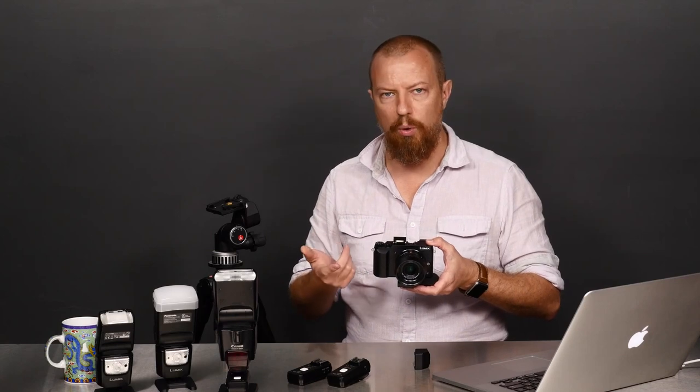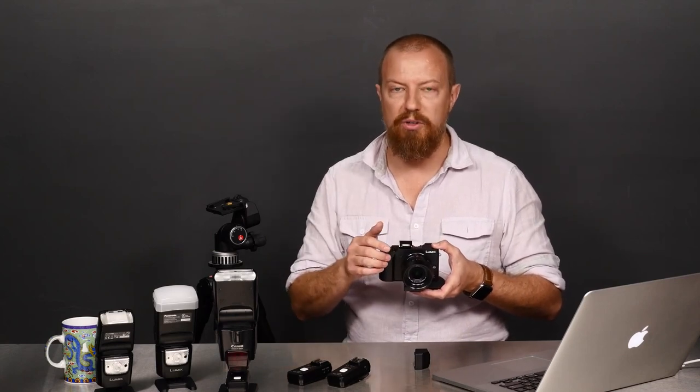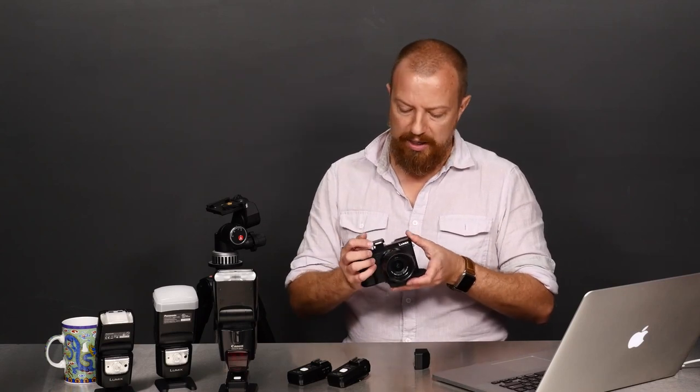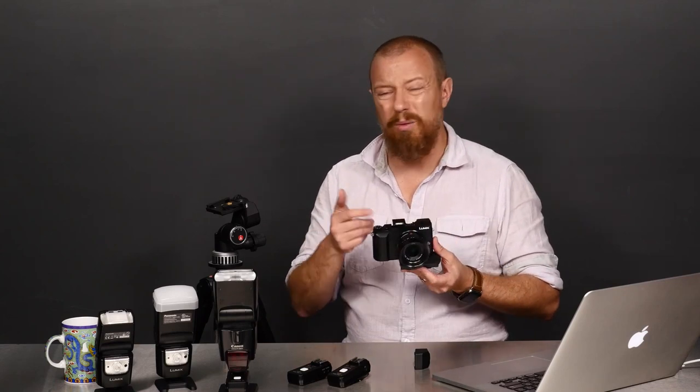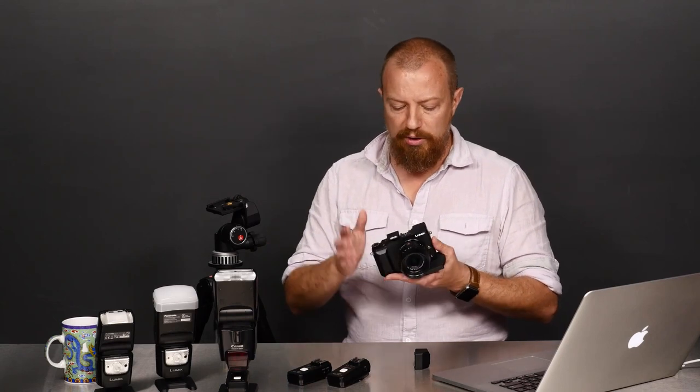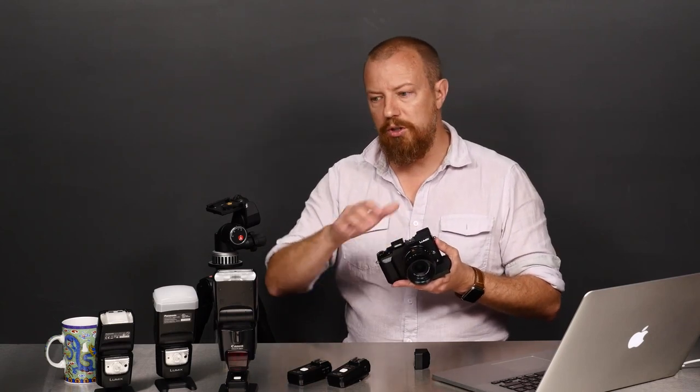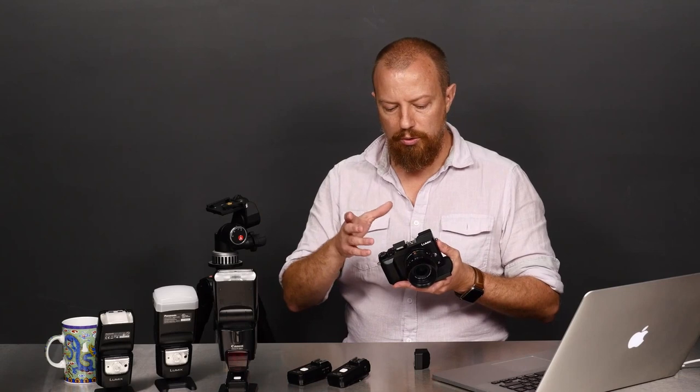Other cameras like the GX8 don't have a built-in flash, so you have to add an external flash to do that anyway. But on a camera like this where you've got this little pop-up flash, you'd think, well, that'd be kind of cool if you could do that. So if you have this camera and you want to control external flashes, you have a couple of options.